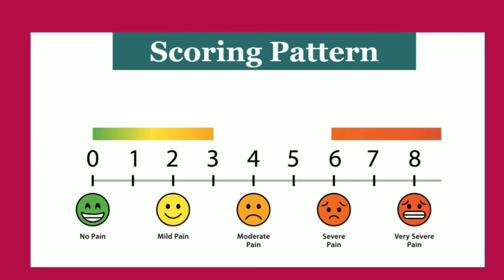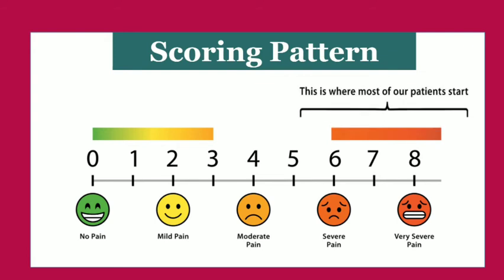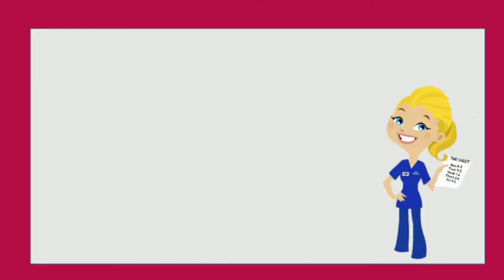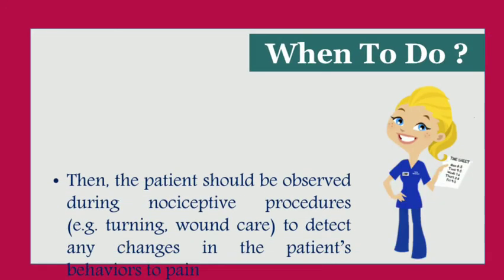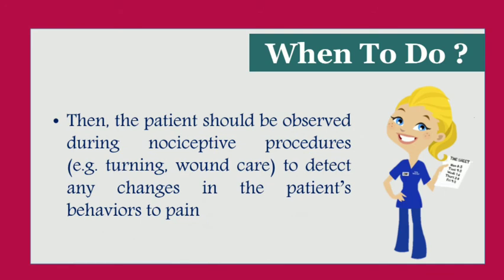The maximum pain score is eight and the minimum is zero. At a score of eight the patient has very severe pain, and at a score of zero the patient has no pain. Moderate pain is at level four. From five to eight is where most patients admitted in critical care areas start, and it's our duty to assess and set goals to bring the pain level down to minimum.